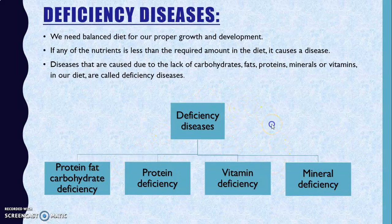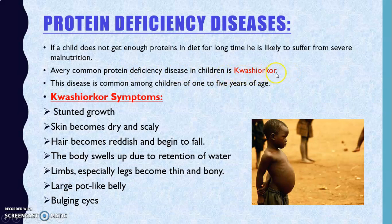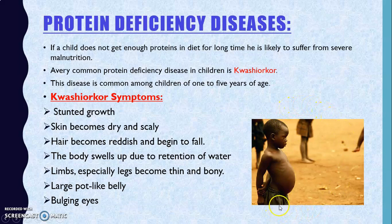The first protein deficiency disease: if a child does not get enough proteins for a longer time, they are likely to suffer from severe malnutrition. The most common protein deficiency disease in children is Kwashiorkor. Symptoms include a pot-like belly, bulging eyes, very dry and scaly skin, hair that turns reddish in color and begins to fall out, and thin bony limbs especially the legs.